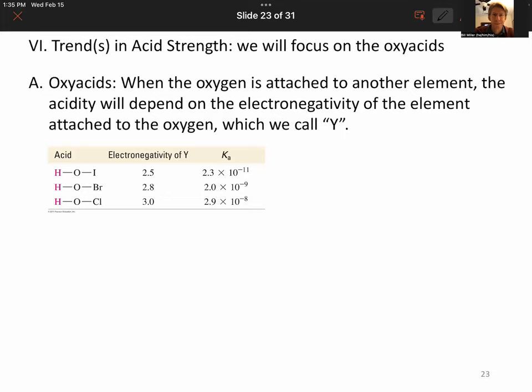So all three of these in this group right here, we could simplify by saying HOY. And if we drew their Lewis structures, it would look something like this with the dots. And all these actually have three pairs of electrons around them. And what we see is as you go in this direction, the Ka values get larger.